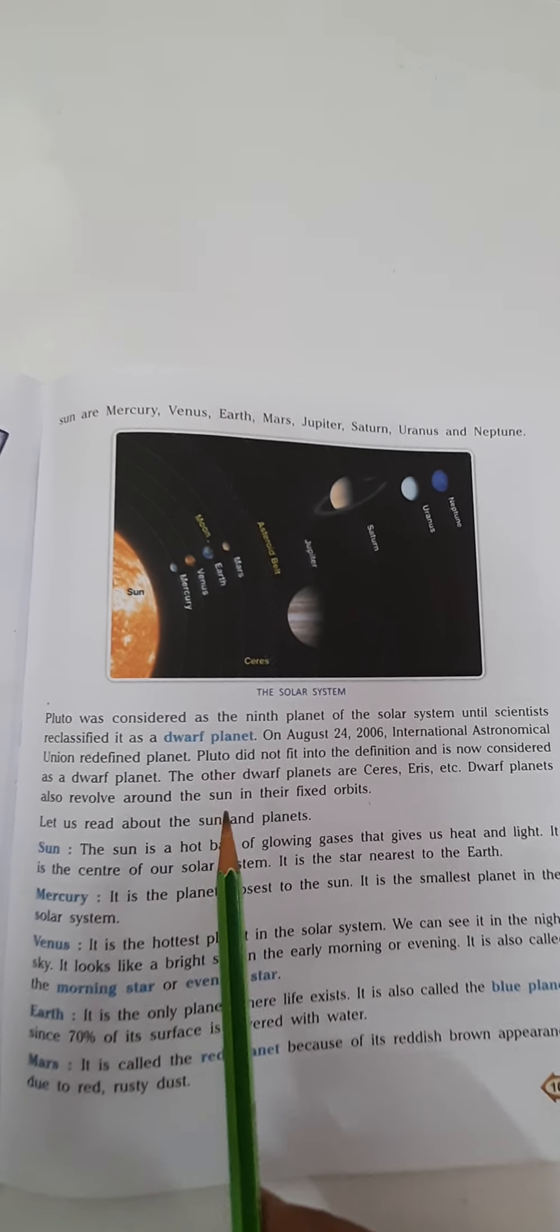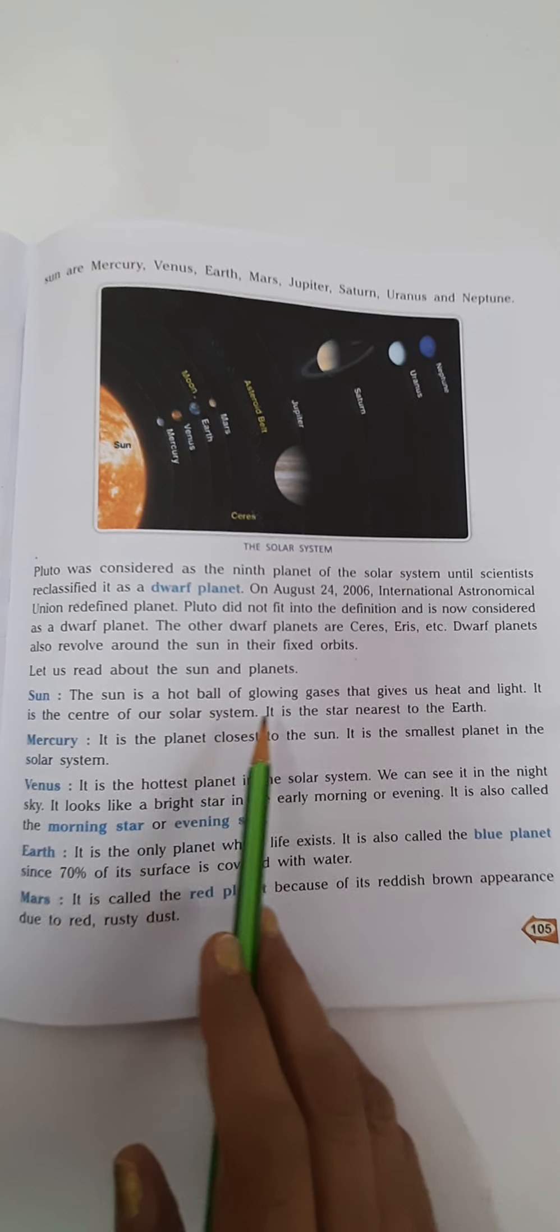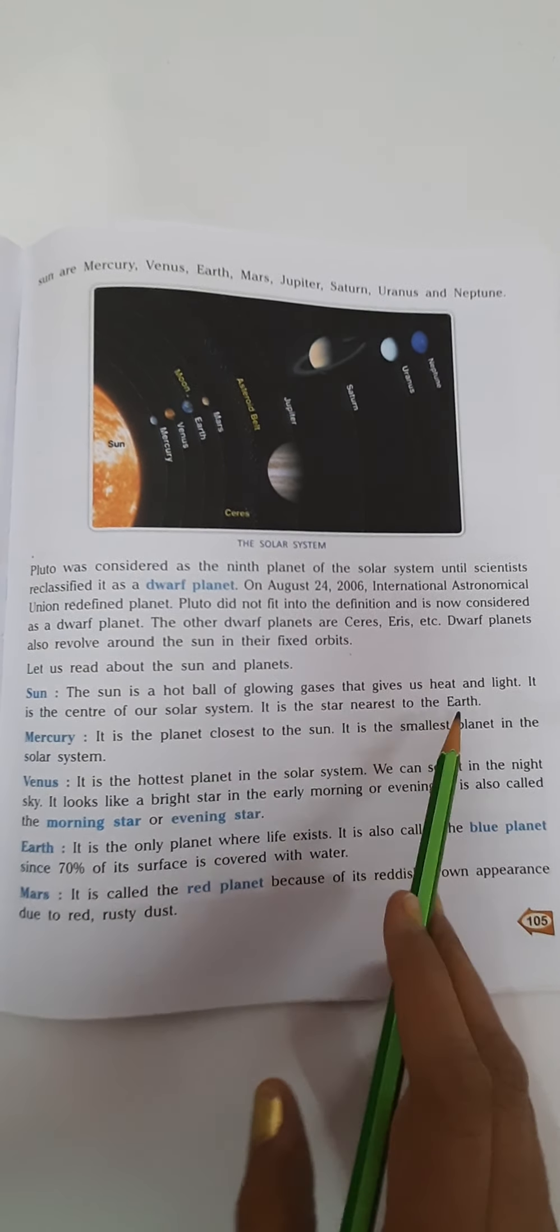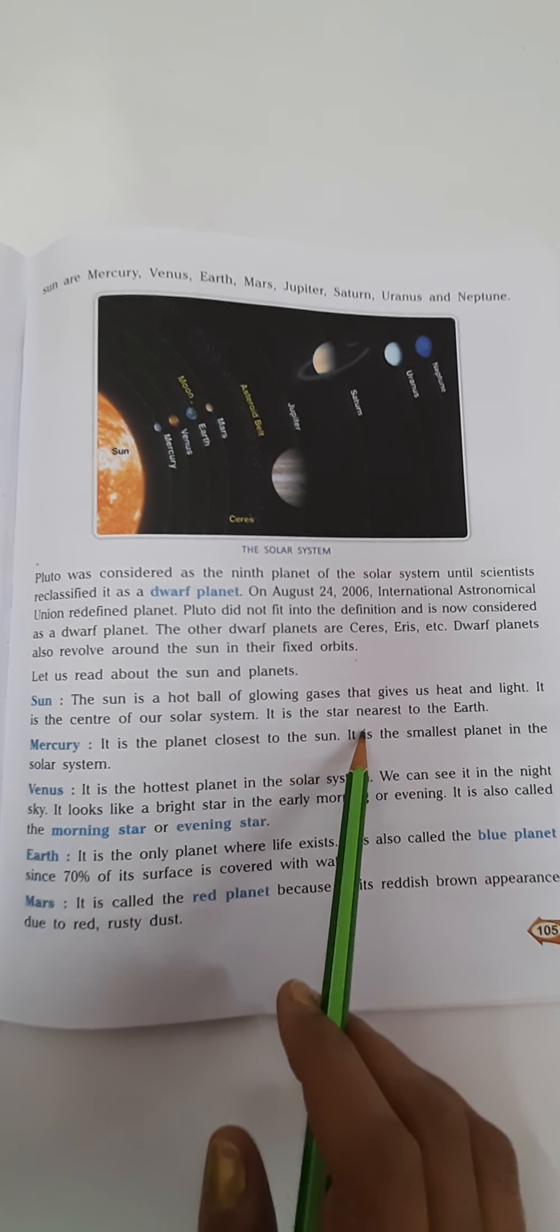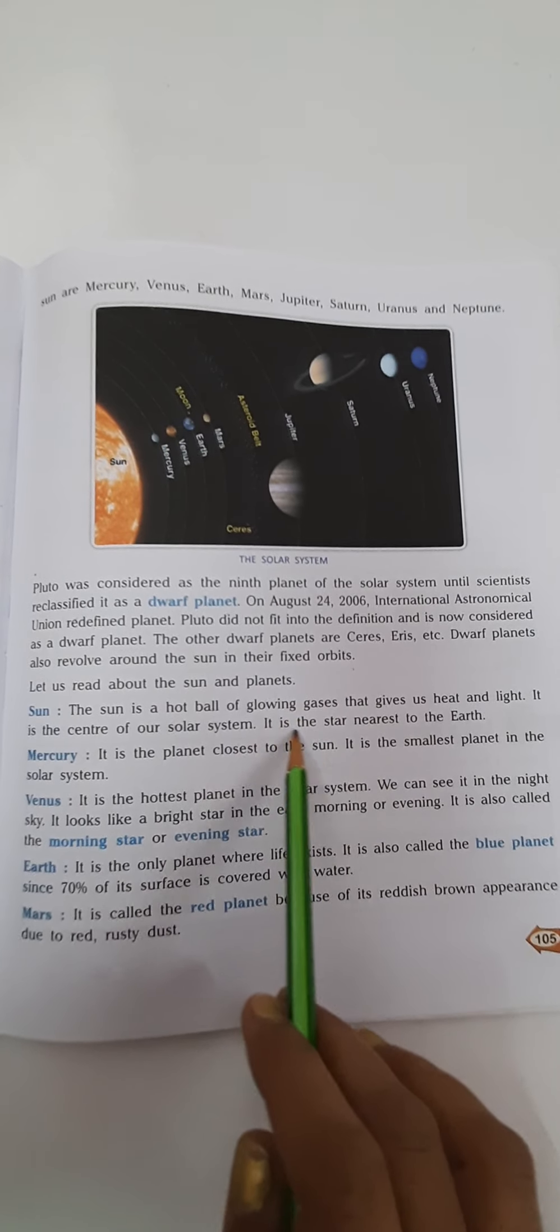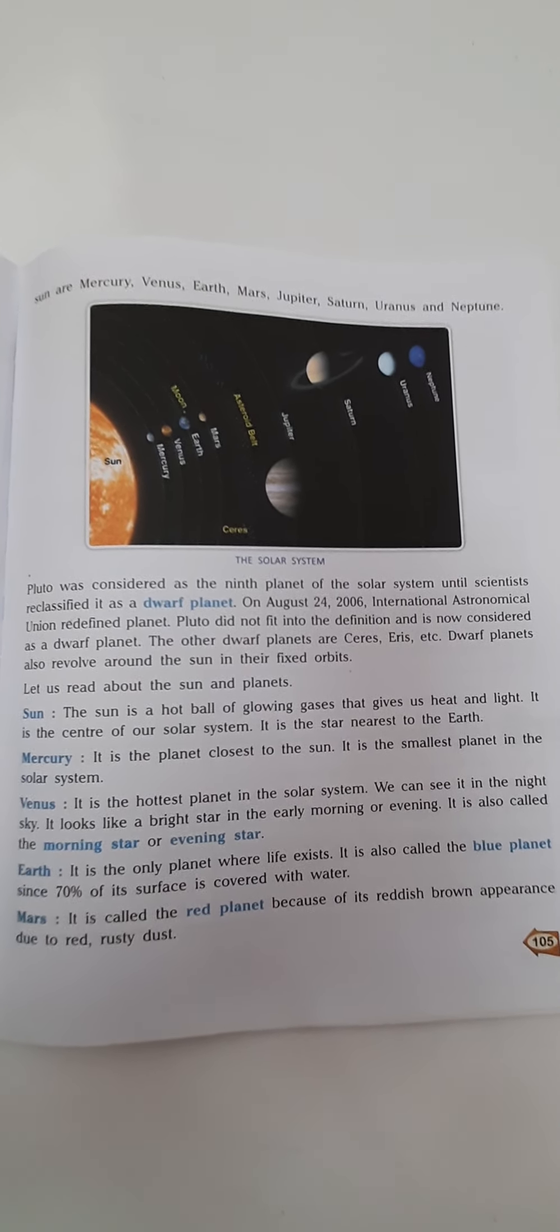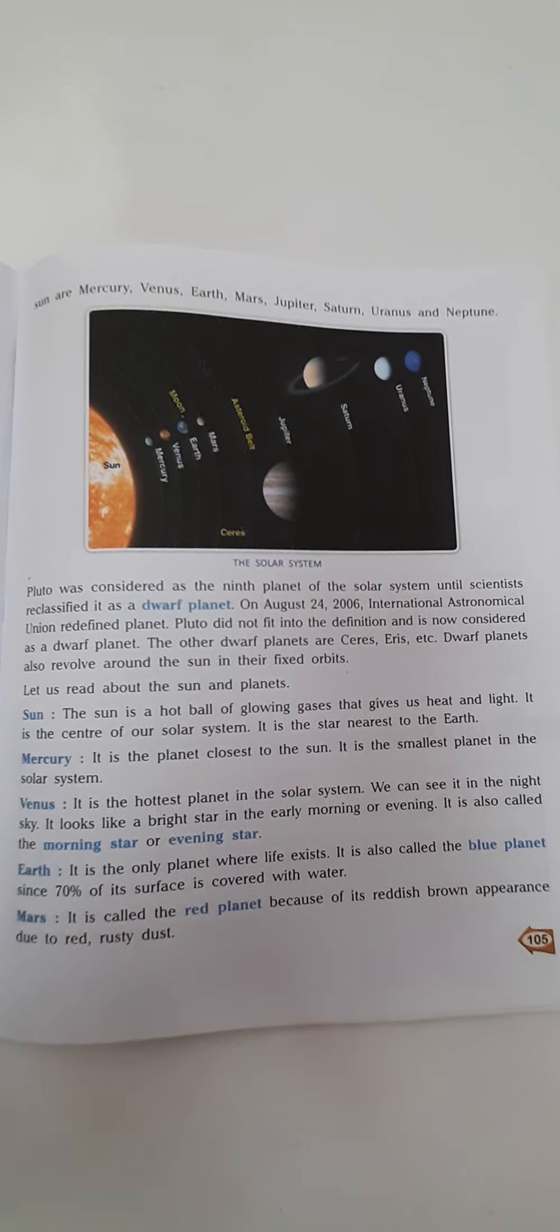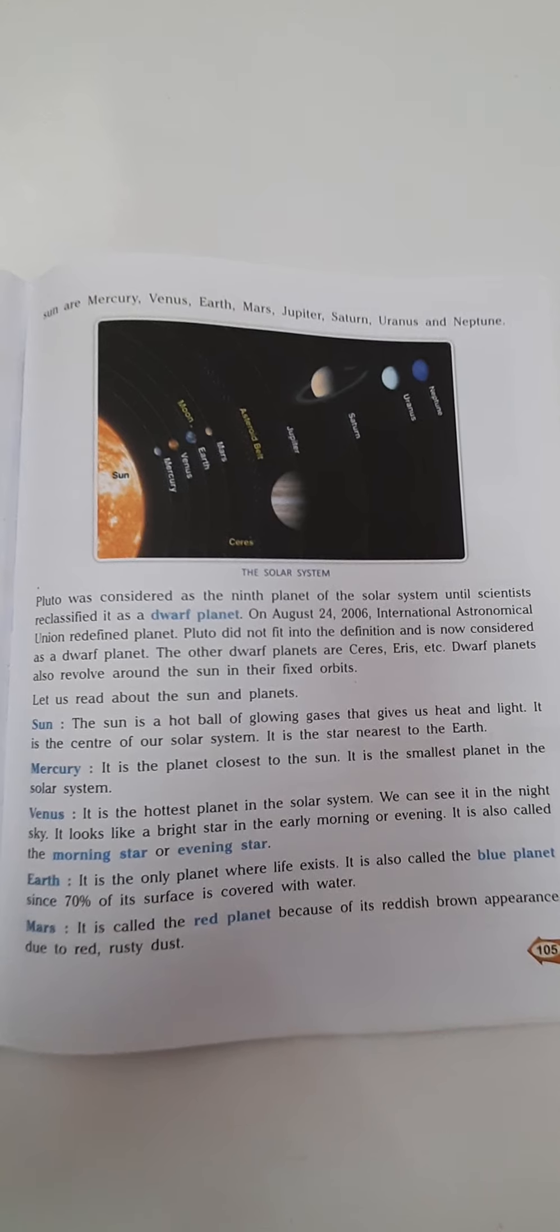Now let us read about the sun and the planets. The sun is a hot ball of glowing gases and gives us heat and light. It is the center of our solar system. It is a star nearest to the earth. Yes, the sun is a star and it is the ultimate source of energy to the earth and to the other planets. It gives us heat and light.